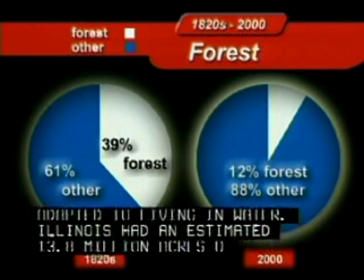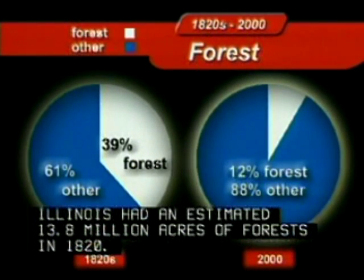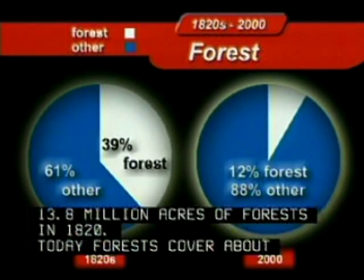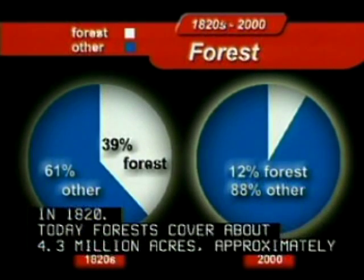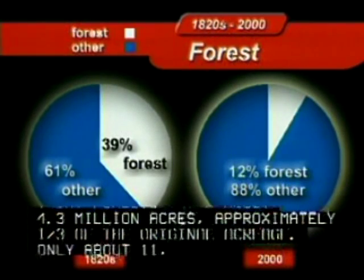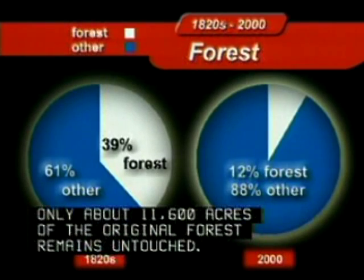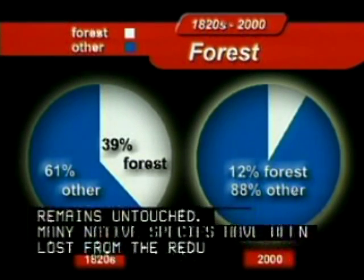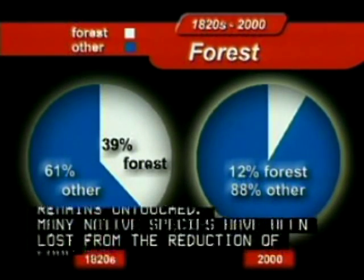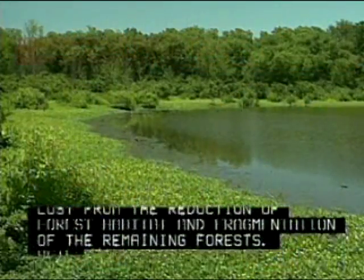Illinois had an estimated 13.8 million acres of forests in 1820. Today, forests cover about 4.3 million acres, approximately one-third of the original acreage. Only about 11,600 acres of the original forest remains untouched. Many native species have been lost from the reduction of forest habitat and fragmentation of the remaining forests.